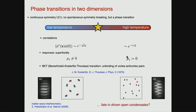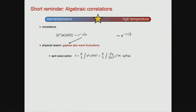Now we want to ask the question: what is the fate of such a scenario in a driven open condensate — a situation with a U(1) symmetry put out of equilibrium? I focus mainly on the properties of the low-temperature phase. So where do these long-range correlations come from? The statement is: it roots really in the presence of gapless modes — gapless spin wave fluctuations which do not cost energy to excite. The action for this spin wave is just described by the gradient of the phase variable squared, which is the kinetic energy contained in the phase variable.